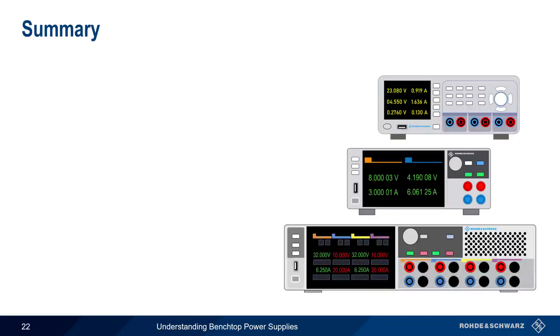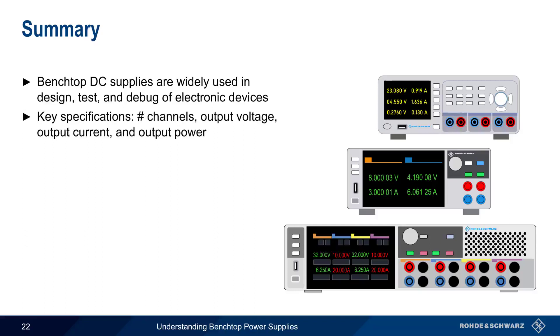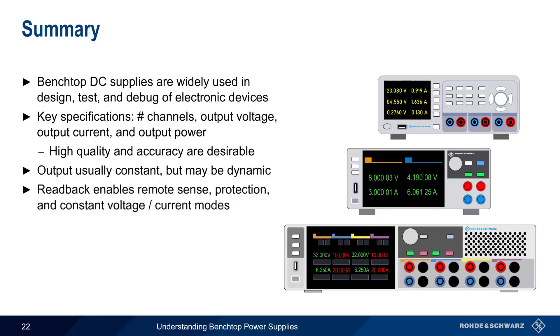Let's summarize what we've covered in this presentation. Benchtop DC power supplies are widely used in the design, test, and debugging of almost all electronic devices. The key specifications for any power supply are the number of channels and the maximum output voltage, current, and power. It's also important to choose a supply with a clean, high-quality output and good precision. In most cases, the output of a power supply is constant, but many supplies support ways to generate a variable output, such as ramp and arbitrary waveforms. Readback shows the measured output values and also enables functions such as remote sense, the different protection types, and switching between constant voltage and constant current modes.